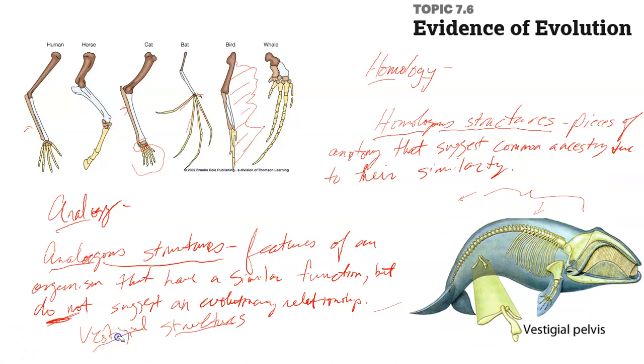Vestigial structures. These are anatomical structures that no longer function for their original purpose.